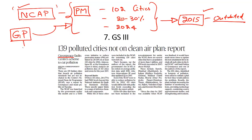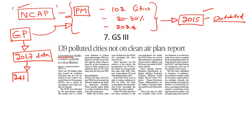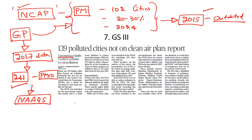Greenpeace used the latest data available for 2017, according to which there are 241 cities in India with very high levels of PM10 — well above the standards prescribed under the National Ambient Air Quality Standards. The Greenpeace report says that 139 cities have been left out, as only 102 of the 241 polluted cities have been included under the National Clean Air Program.